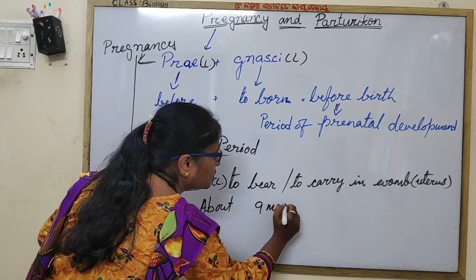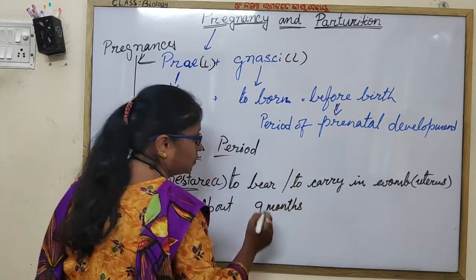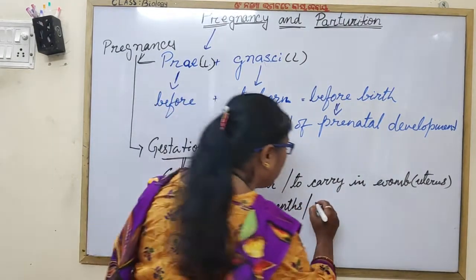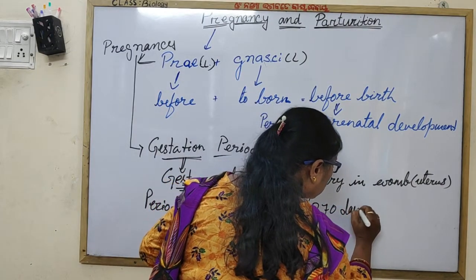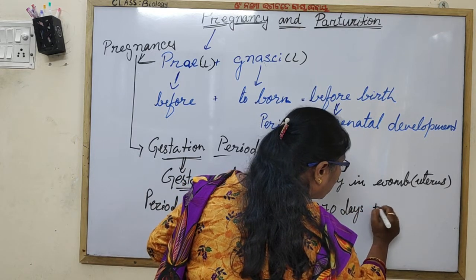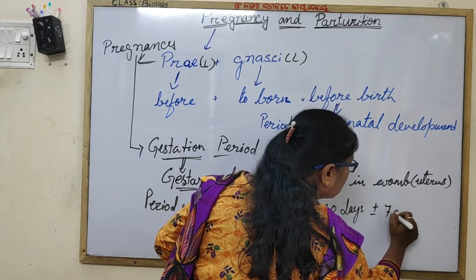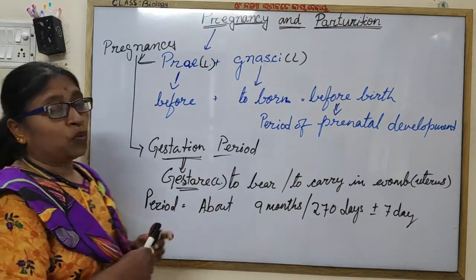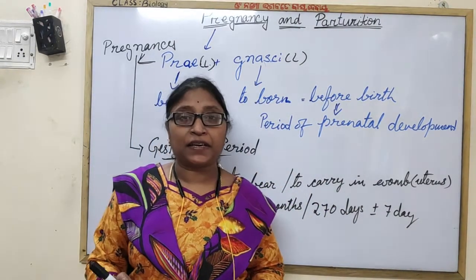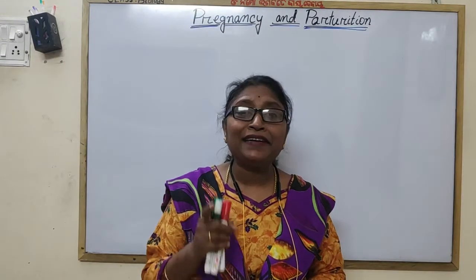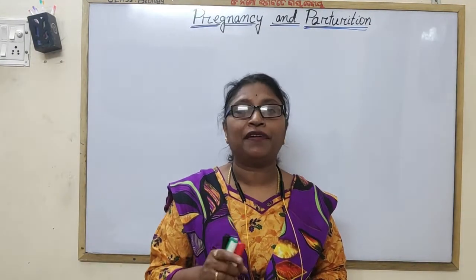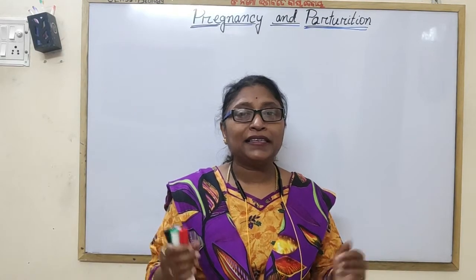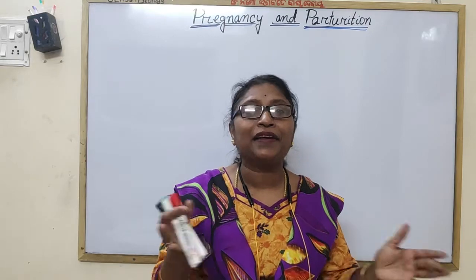The gestation period is approximately nine months, or 270 days, plus or minus 7 days. More precisely, pregnancy is the intrauterine development of the embryo or fetus — that is, development inside the mother's uterus or womb.